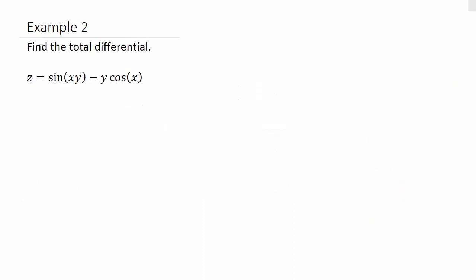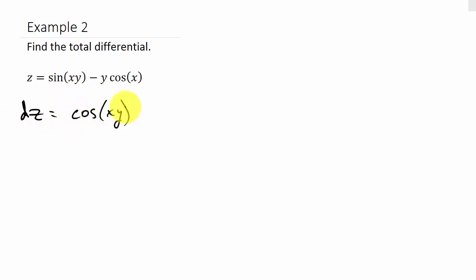Let's look at the second example — find the total differential. We want to find dz, so that's the partial of z with respect to x. We're taking the partial with respect to x, so y is considered the number. The derivative of sine is cosine of xy, times the derivative of what we're taking the sine of. The derivative of xy — x is the variable, y is the number — so that would be times y.